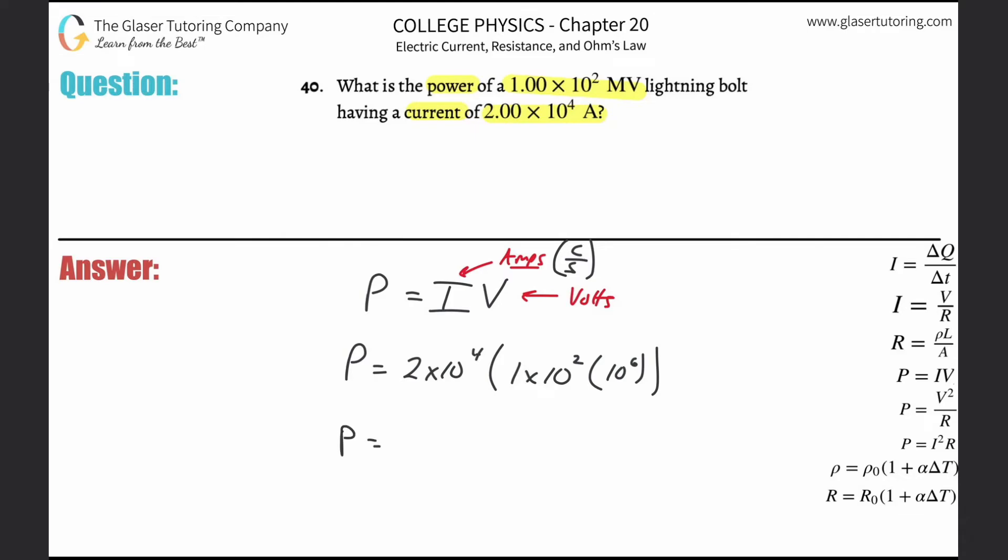And now all I need to do is basically plug it in. So 2 times 10 to the 4 multiplied by 1 times 10 to the 2 times 10 raised to the 6. And we get a value of 2... got to plug that into the calculator. 2 times 10 to the 12. All right. The units for power are watts. Or in other words, you could have written it as joule per second. It doesn't matter.